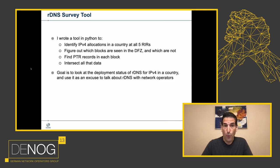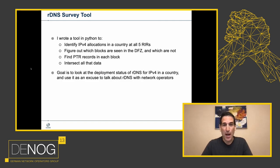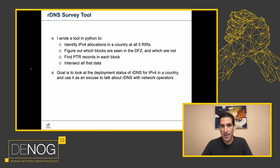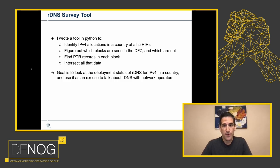I'm only doing this for IPv4 because it's that last bit — scanning the PTR records — that I haven't figured out how to do yet in IPv6. The space is too big. Statistical sampling doesn't seem to work very well, and scanning all the records takes too much time. So for now, for the first stage, I'm just doing IPv4.